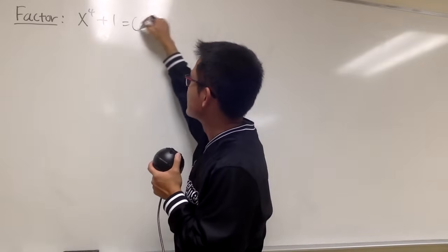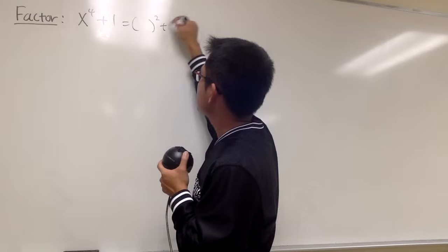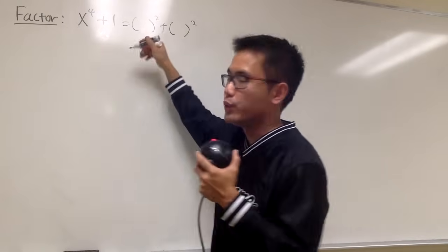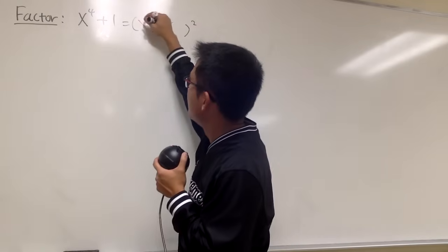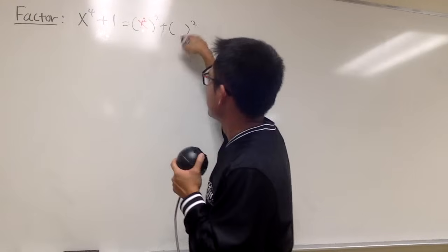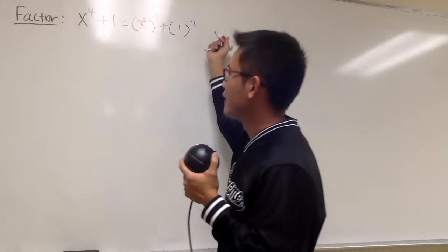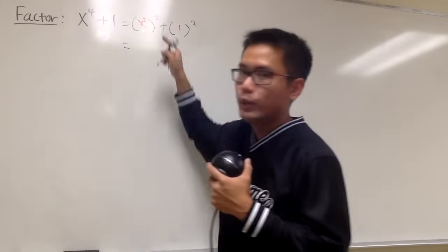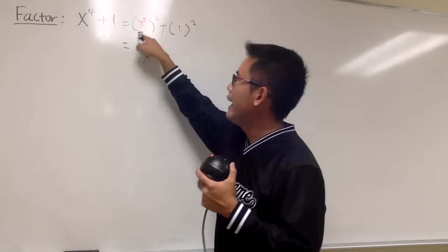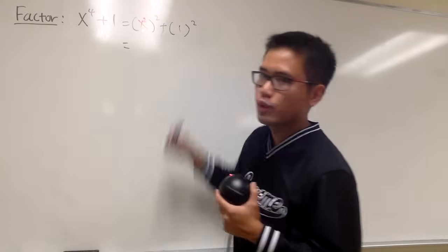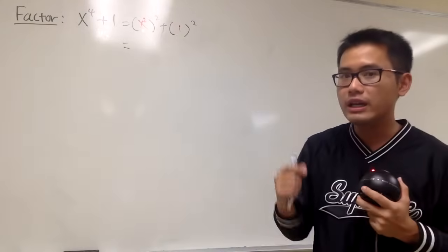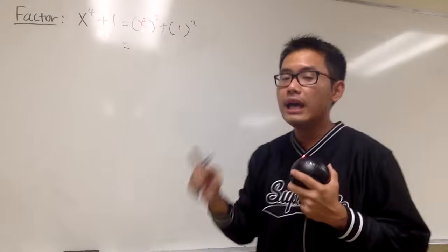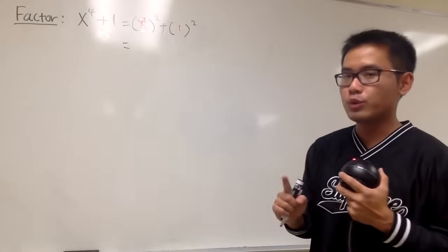First, we'll look at this as a sum of 2 squares. I'll put this down like this, and then to fill in these parentheses, we know we have to put down x squared, and then for this one we just have to have a 1, so they are the same. And now we have pretty much a squared plus b squared, and this is the one I want to use.